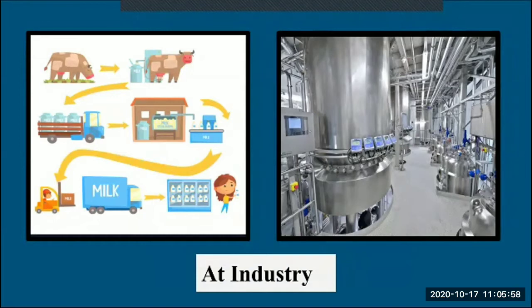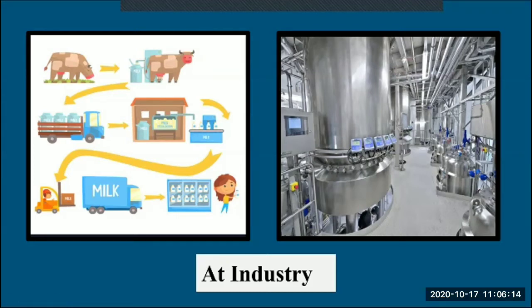As explained through the flow chart, the same stages can be observed in the industry. At the industry level, highly modified and high-tech processes take place in milk production.